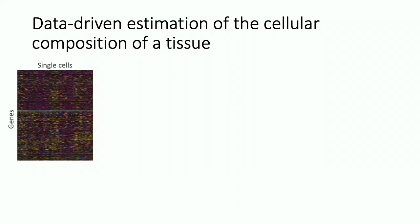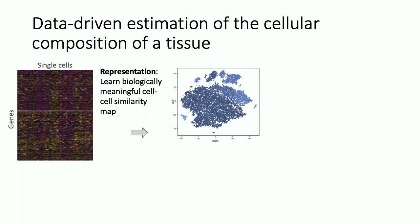Our goal is data-driven estimation of the cellular composition of tissue. Starting from single-cell RNA sequencing data — this big matrix — we want to learn some structure. One way to think about it is to learn a meaningful cell-cell similarity map. If I give you two cells, two columns in the matrix, and ask how similar they are, you could look at their correlation or Euclidean distance, but these aren't necessarily very informative because they can be perturbed by noise or uninteresting genes. Finding cell-cell similarity maps that mean something biologically is a major challenge in the field.